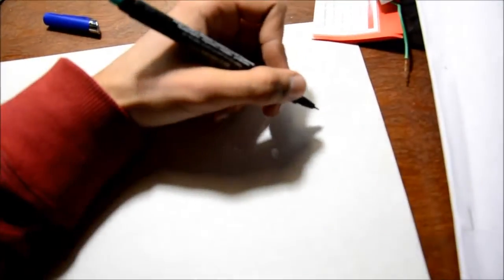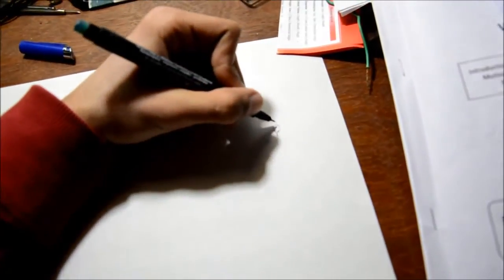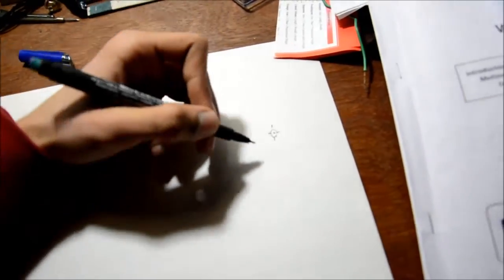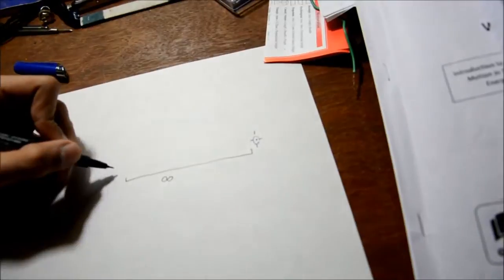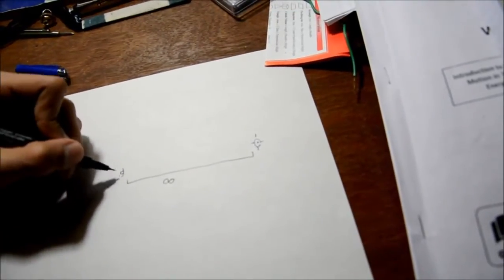First we should ask ourselves what does a reflex sight do? It projects upon your field of view an illuminated reticle that is at infinity. So it is a virtual image.